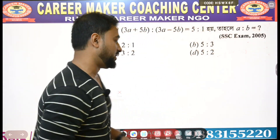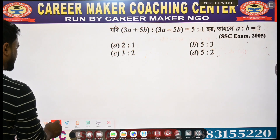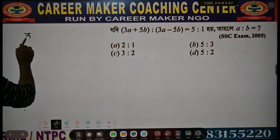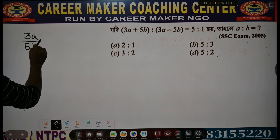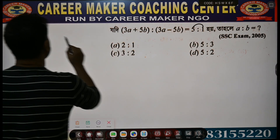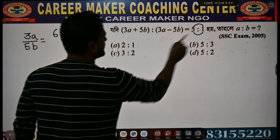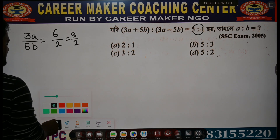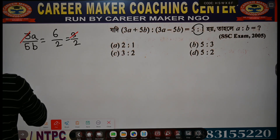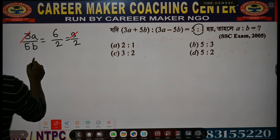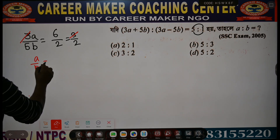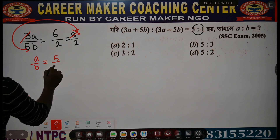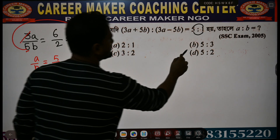If you use this method directly: 3a by 5b equal to 3 by 2. So a by b equal to 5 by 2. Therefore A by B equal to 5 by 2. Answer is D.